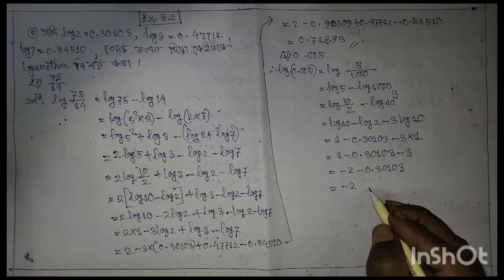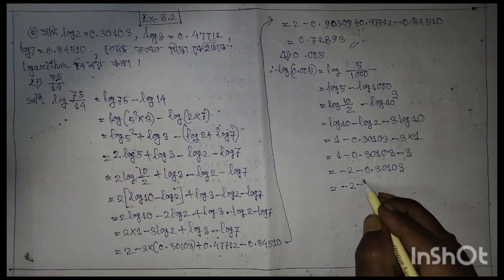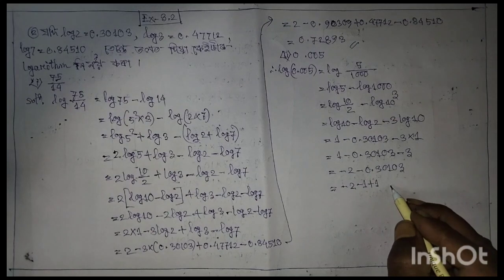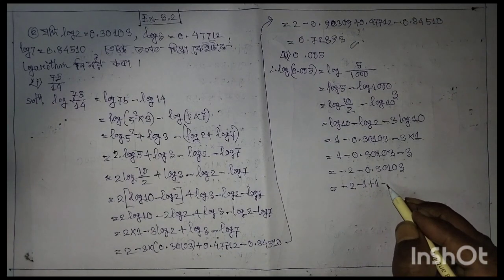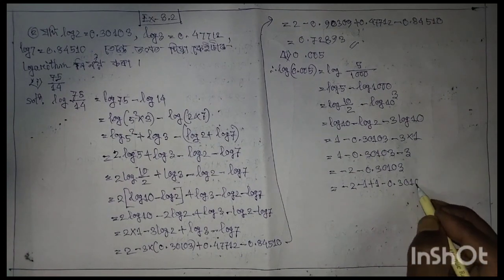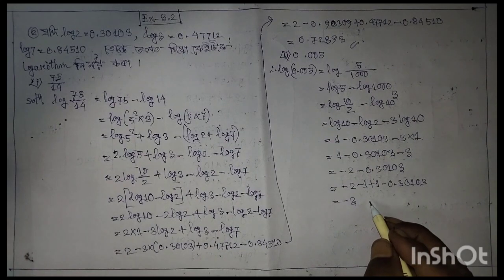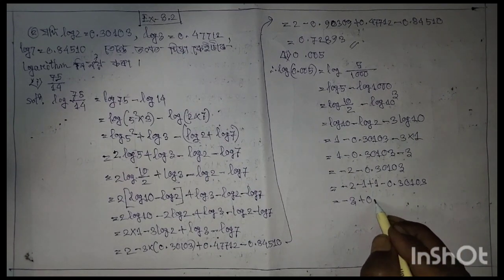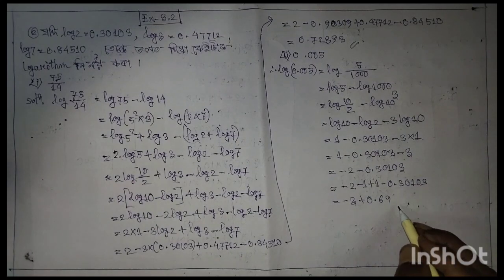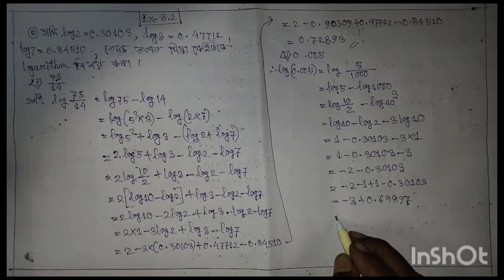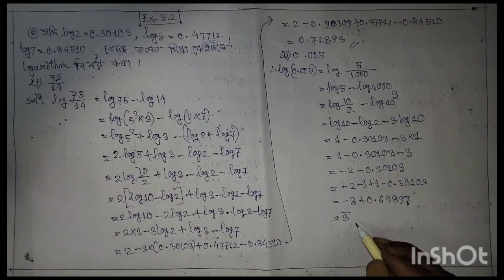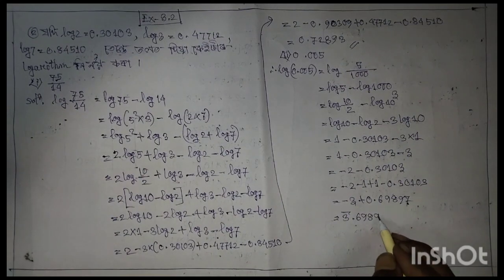Minus 2, minus 1. Then 0, 0, 2, 0, 1, 0, 2, 0. Minus 3, minus 3, plus 0.6, 9, 8, 9, 7. Final result: minus 3 plus 0.6989, giving minus 2.3010.